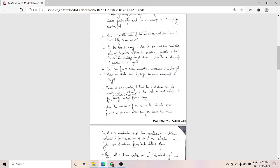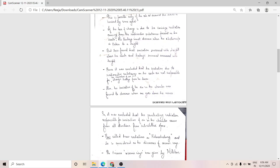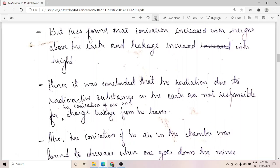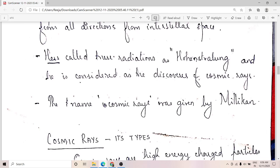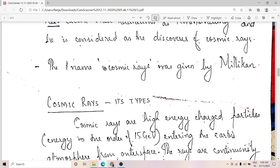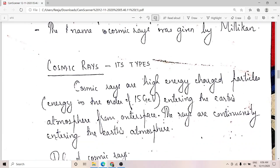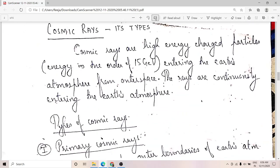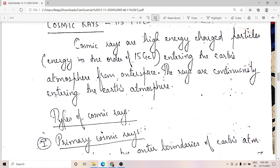But the term cosmic rays was coined by Millikan. As I told you, cosmic rays are high energy charged particles entering into the earth's atmosphere from outer space in all directions. Now, what are the different types of cosmic rays? They are of two kinds: primary cosmic rays and secondary cosmic rays.